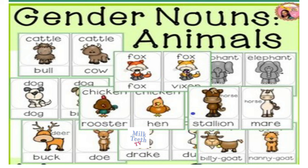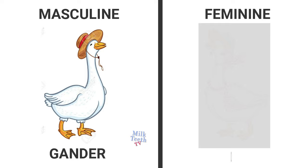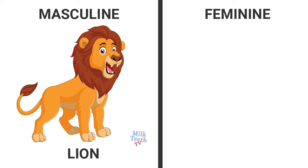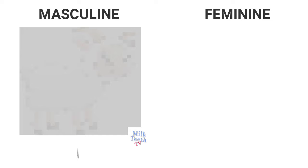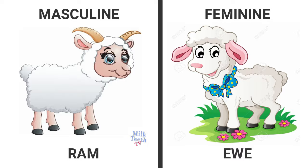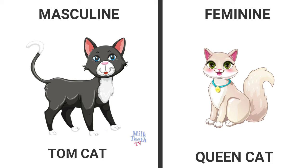Animals are also living beings like us, so they too have genders. Gander — goose. Lion — lioness. Tiger — tigress. Ram — ewe; both are sheep. Tom cat — queen cat; both are cats.